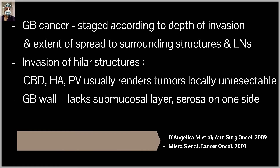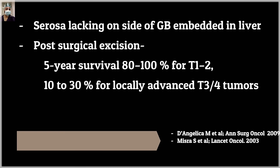Gallbladder cancer is staged according to the depth of invasion of the gallbladder wall and the extent of spread to surrounding structures and lymph nodes. Invasion of the bile duct, hepatic artery, or portal vein usually renders the tumor locally unresectable or requires major surgery. One peculiarity of the gallbladder is that there is no submucosal layer — it is a hollow viscous organ that lacks submucosa. The gallbladder is also partly intraperitoneal, with one side embedded in the liver without peritoneal covering. Five-year survival is 80–100% for T1–T2 after resection, but drops to 10–30% for locally advanced T3–T4 tumors.